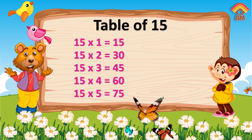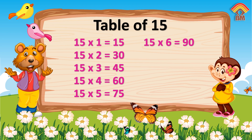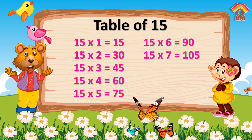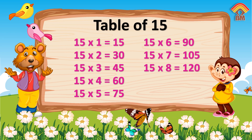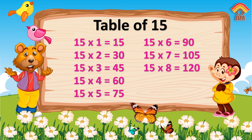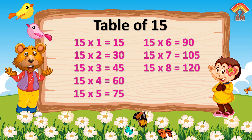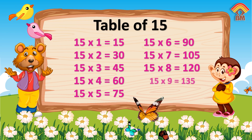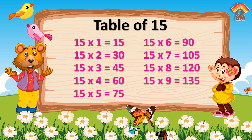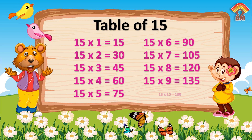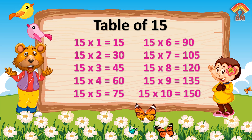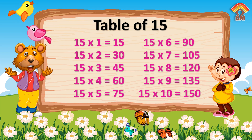Fifteen 6s are ninety. Fifteen 7s are one hundred and five. Fifteen 8s are one hundred and twenty. Fifteen 9s are one hundred and thirty-five. Fifteen 10s are one hundred and fifty.